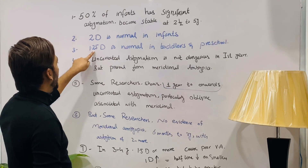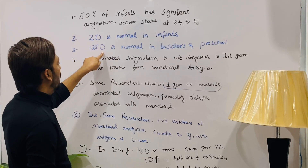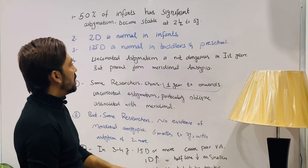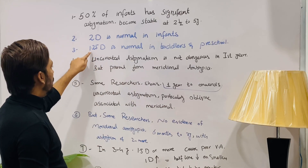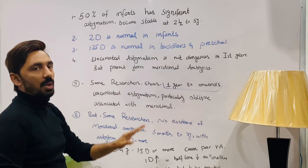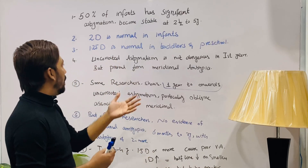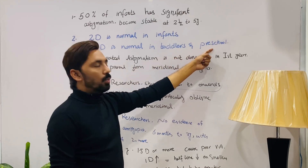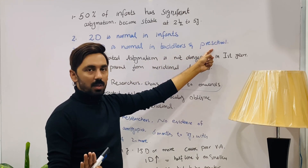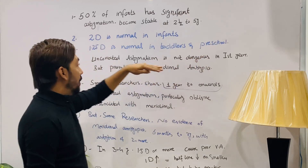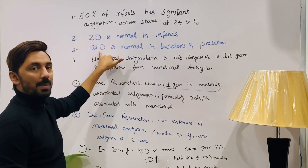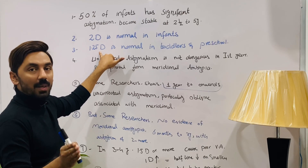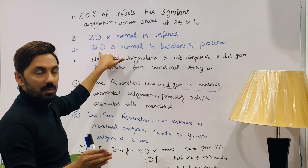1.25 diopters of astigmatism is normal in toddlers and preschool age group. If the age is one to three years and astigmatism is 1.25 diopters or less, there is no need to correct it. If you prescribe this astigmatic correction, you will disturb emmetropization and make the patient wear glasses for life.